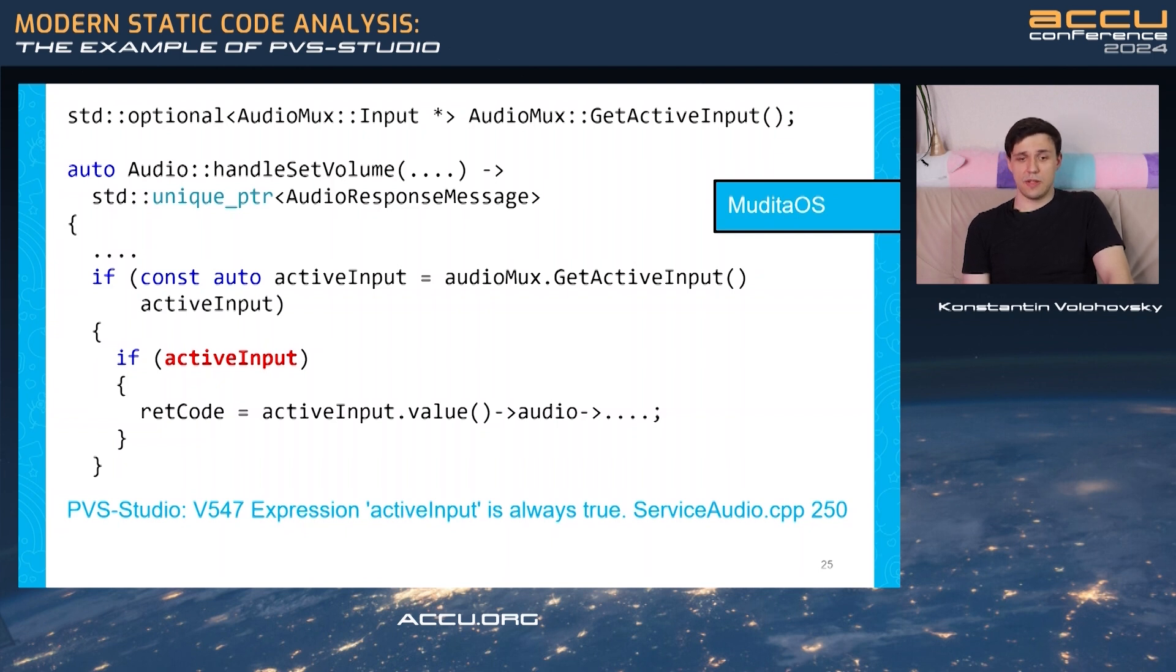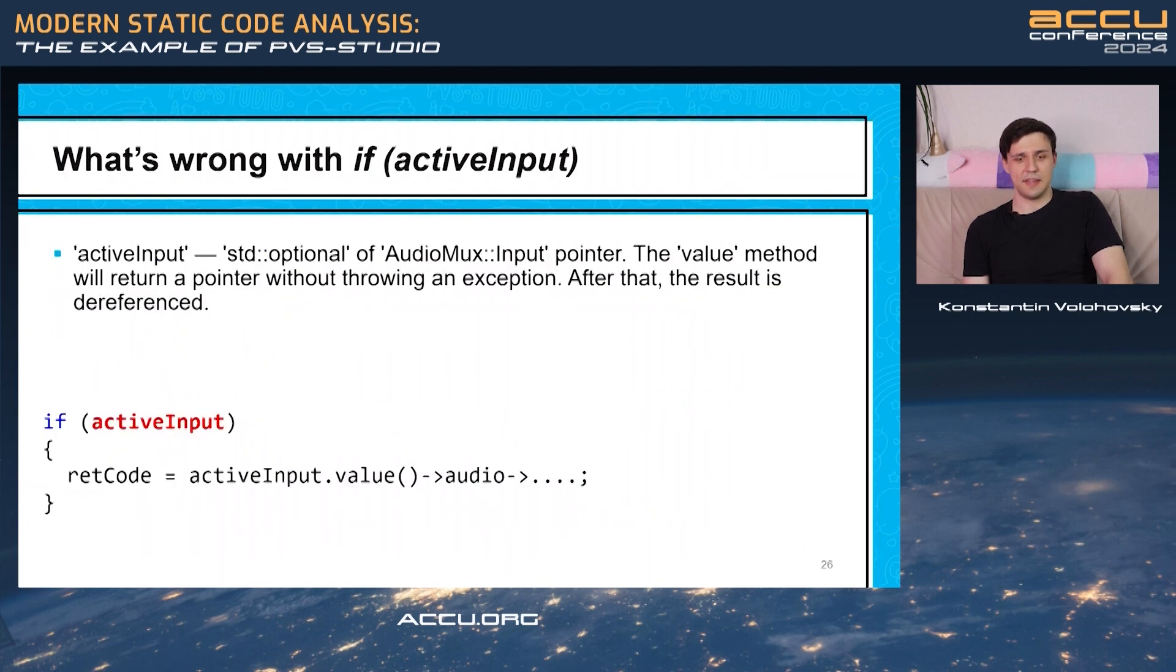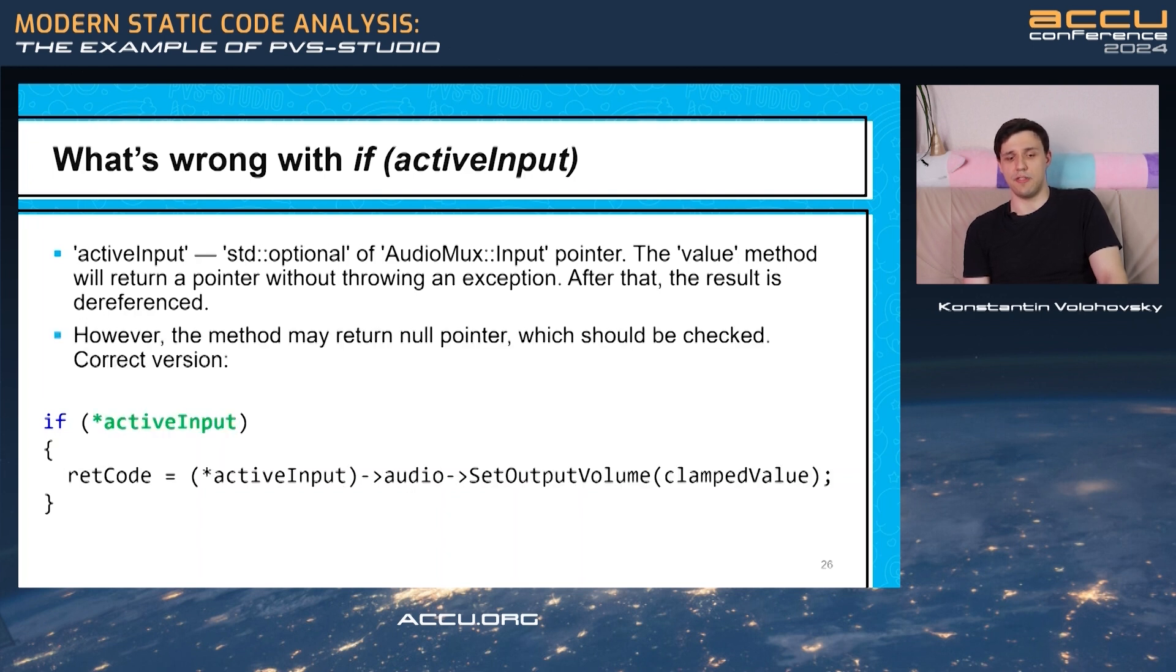And now look at this one. It may even seem okay at first glance, but take a closer look at active input type. It has STD optional type, and in this condition, it will always result in true. That happens because, of course, there is an object inside this variable. You may end up referencing a null pointer in that case. To fix the issue, you have to either reference an STD optional object or use a value method.